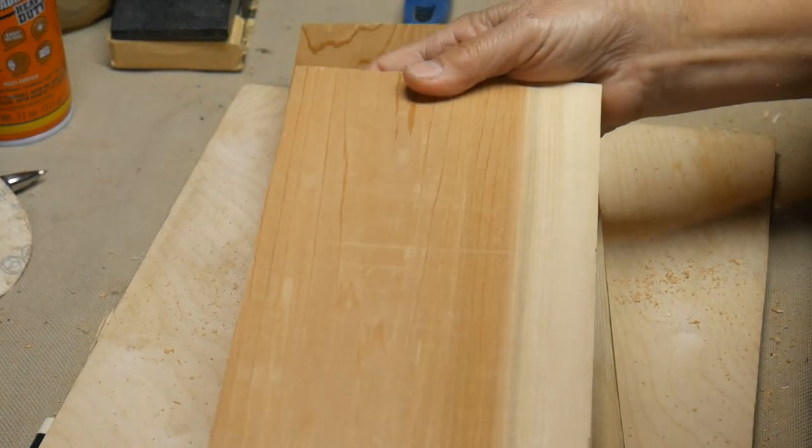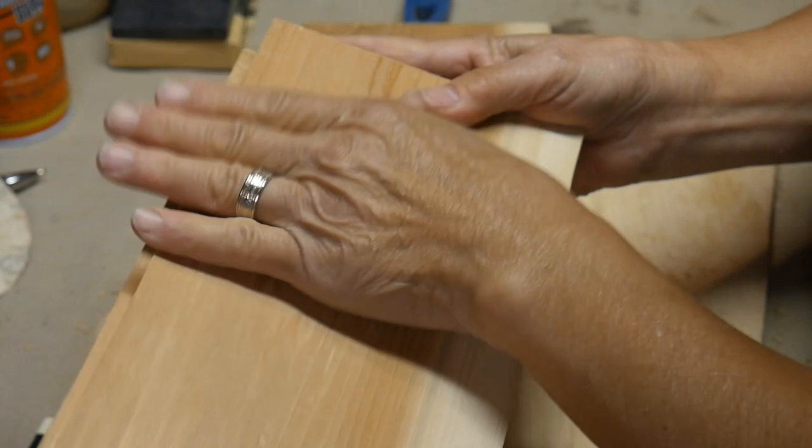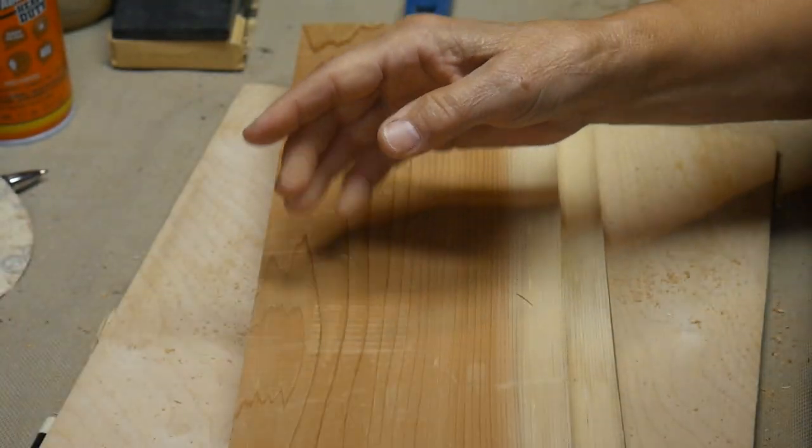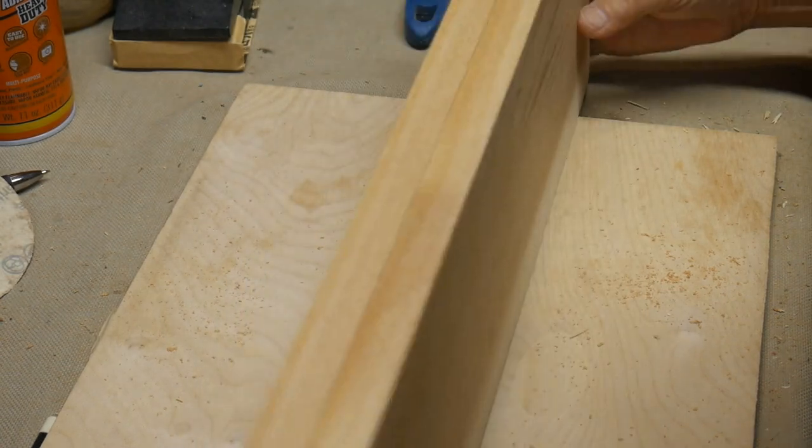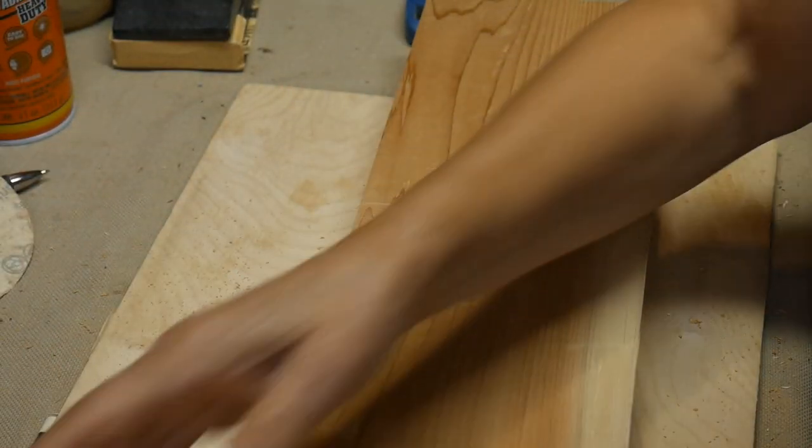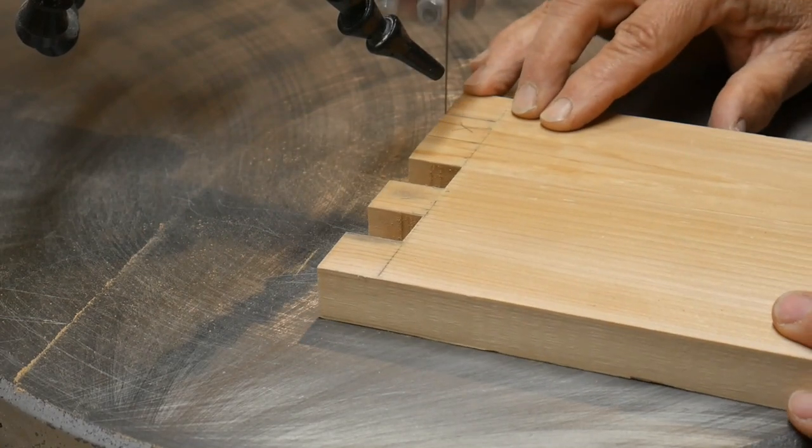Cutting all my pieces to the exact dimensions. I have my basic pieces cut. I have two five and a half by ten inch pieces for the ends, and I have two five and a half by eighteen inch pieces for the sides.